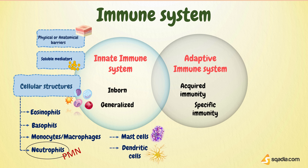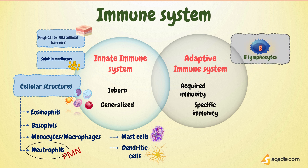On the other hand, in adaptive immunity, mainly lymphocytes are involved — that are B lymphocytes, or simply B cells, and T lymphocytes, or simply T cells.